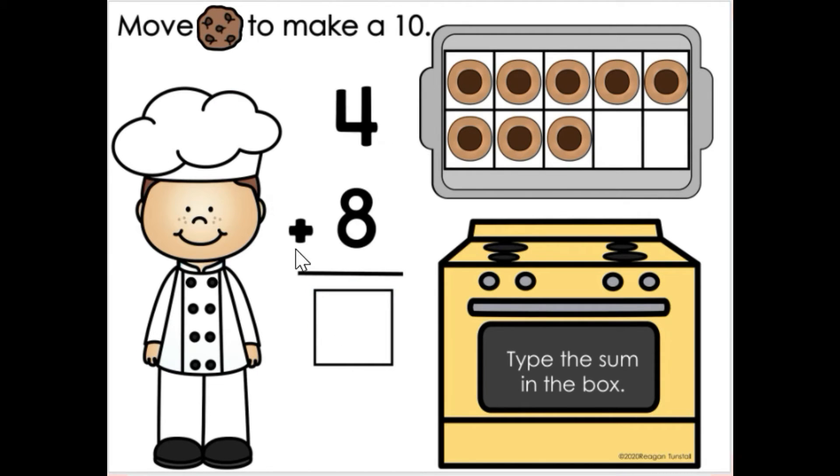So I have 4 plus 8. Okay. So I know that I can put 2 more in here from my 4. So I'm going to think of this, pull my cookies for 4 more. So I'm going to do 1, 2, 3, 4 more cookies. Now I'm going to put 2 of them in here to fill up my 10 first.